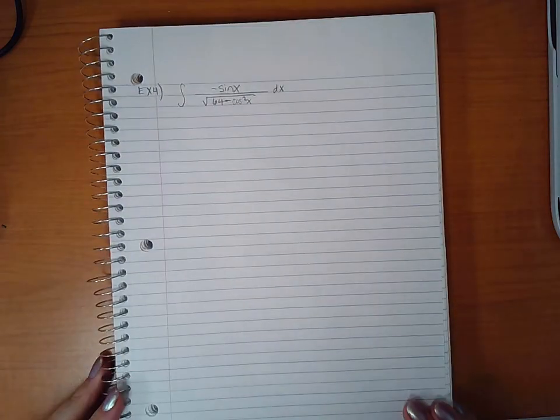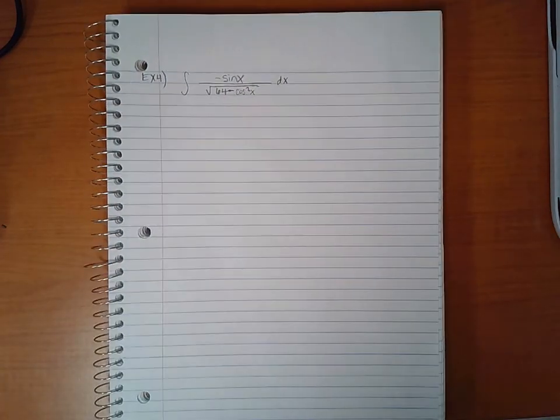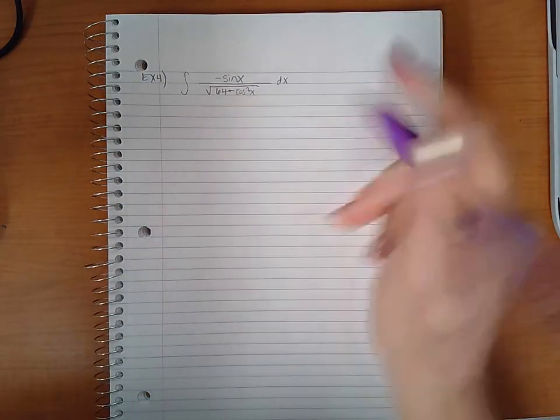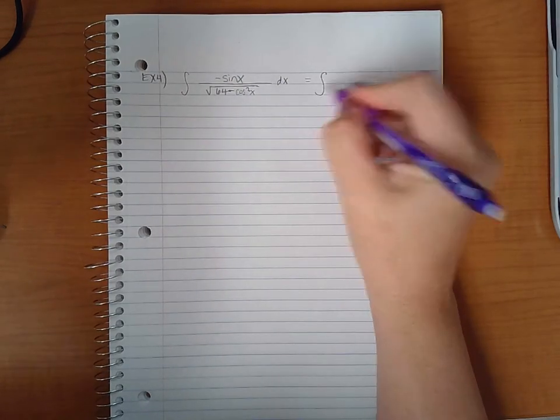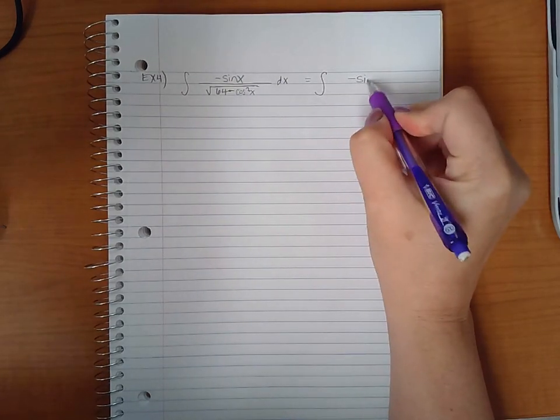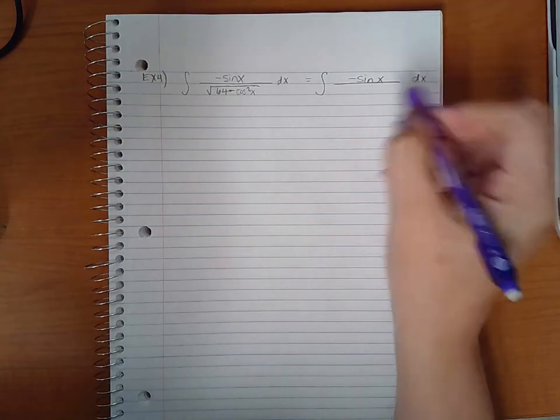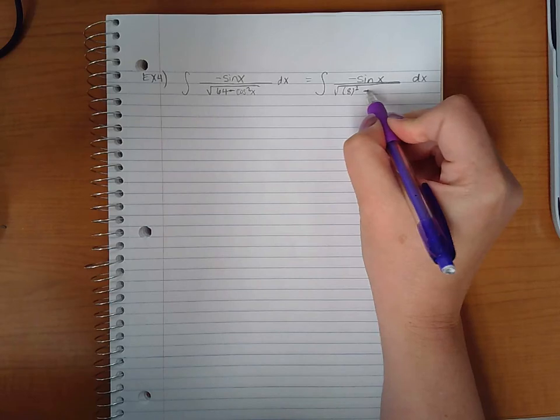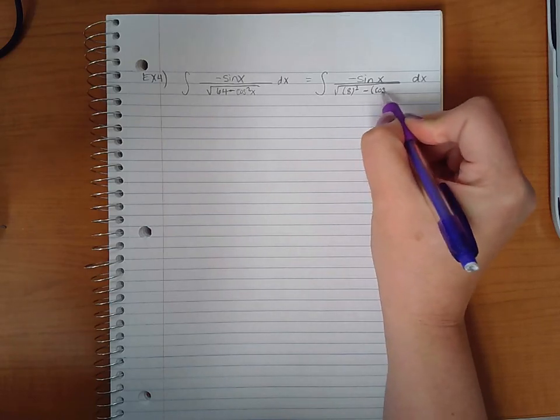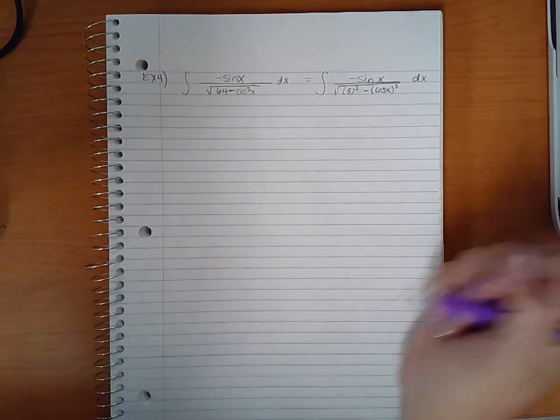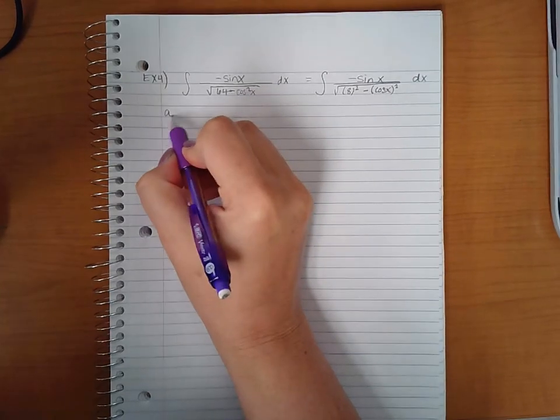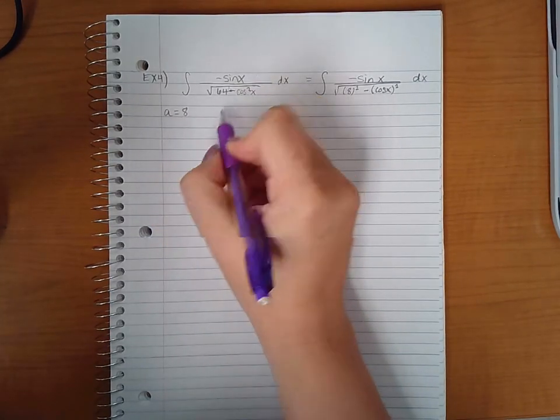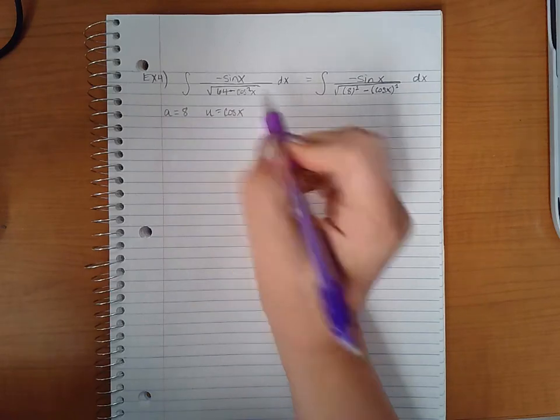Now I'll go over the last problem here. So example 4. Now to identify what is u, I am going to rewrite that inside of that square root as squares. So 64 is 8 squared, and then cosine squared is of course cosine of x squared. So this helps me identify that a is 8, and u is going to be cosine of x.